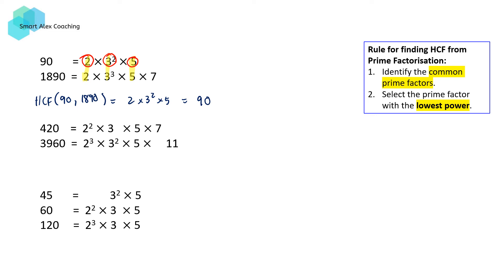The next set of numbers, we've got 420 and 3960. Again, we're going to identify the common prime factors, which are 2, 3, and 5. 7 and 11 are not common in both, so we don't take them. And once we identify the common prime factors, we're then going to choose the one with the lowest power.